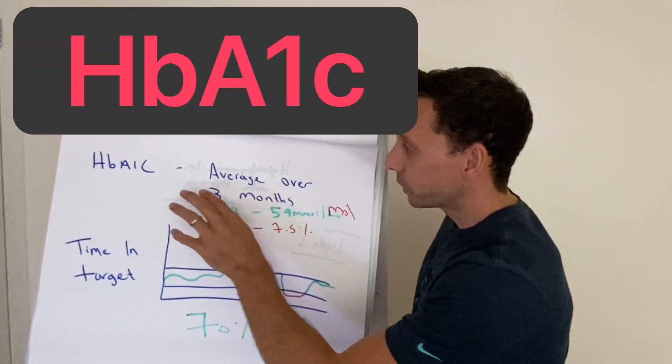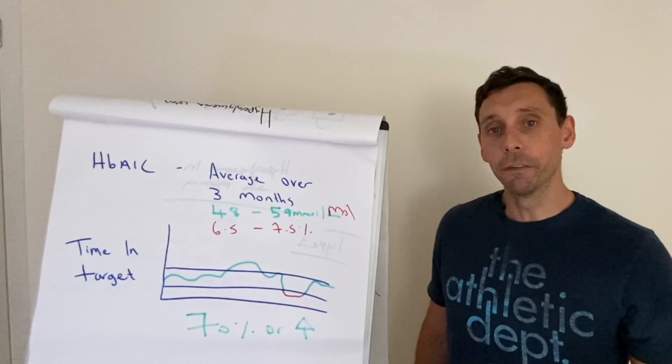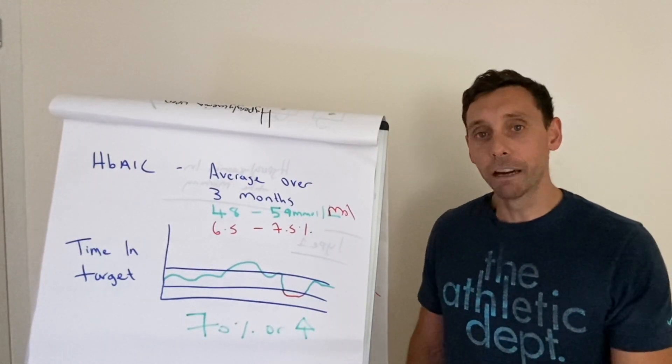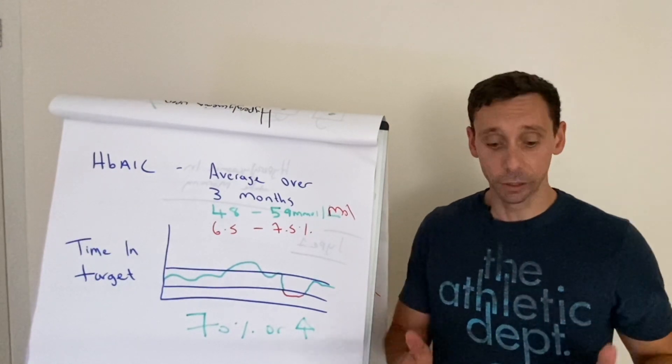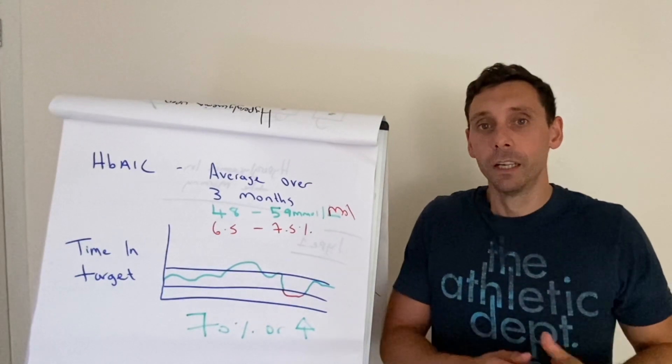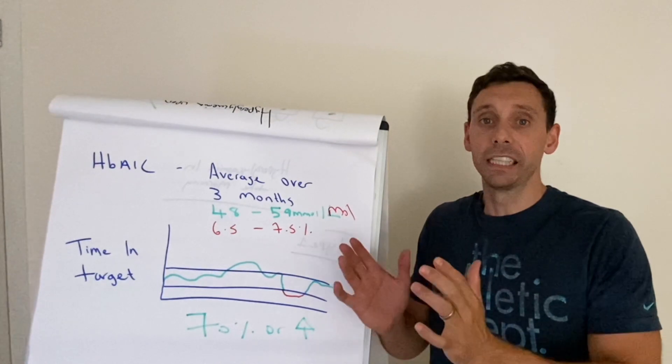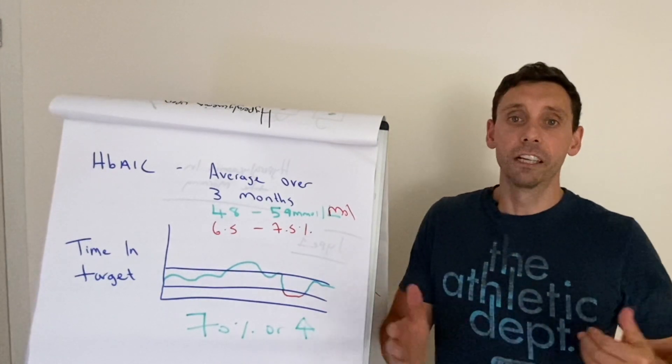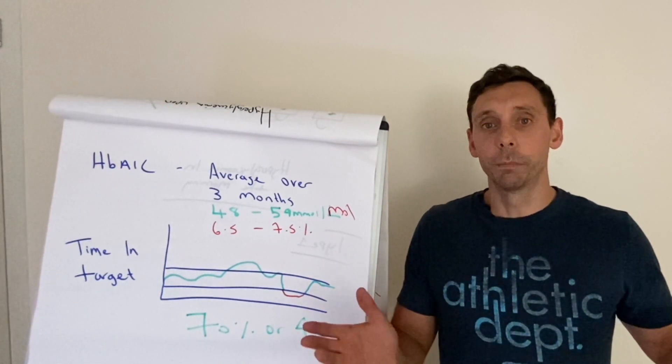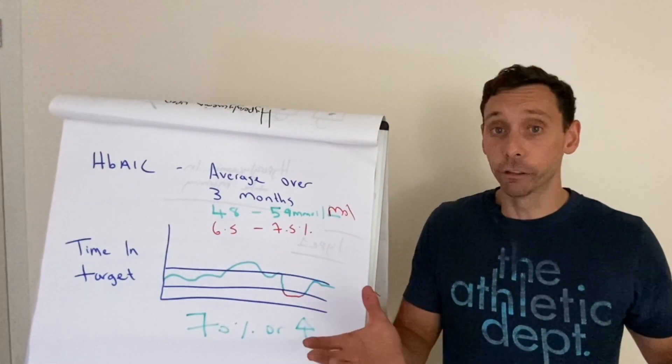So the HbA1c test is a blood test. And the best way to think about this is it is a three-month average of your glucose levels. So it gives us an insight into what's happened over those last three months. And what we want to do is look at the trend of these over many months and many years, because then we can get an idea about how well your glucose levels have been controlled over a period of time on average.